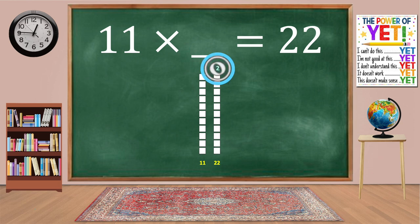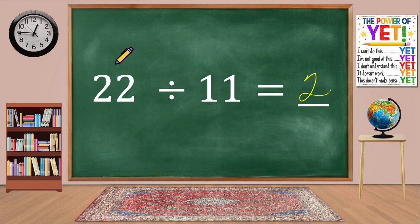We have one column. 11 times 1 equals 11. 11 divided by 11 equals 1.